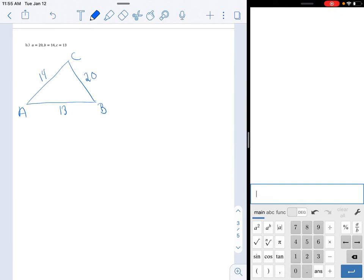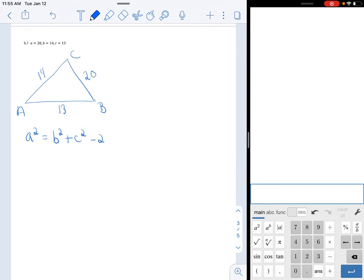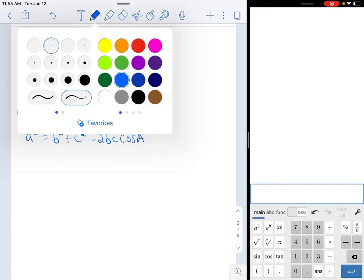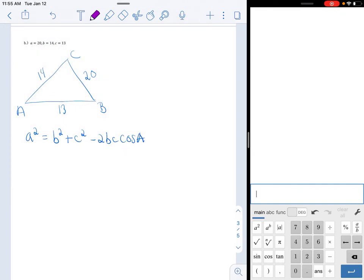And if I do that, then I am forced to use this equation. A squared equals B squared plus C squared minus 2 times BC cosine A. So let's substitute in the values we have. So A is 20, B is 14, C is 13, minus 2 times 14 times 13 times cosine A.